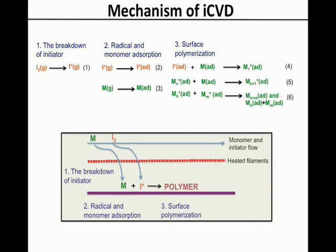Polymerisation is propagated by the addition of more monomer units. Polymerisation is terminated by bimolecular chain termination through coupling or disproportionation.